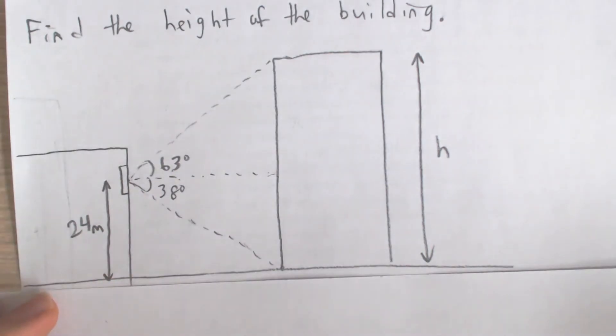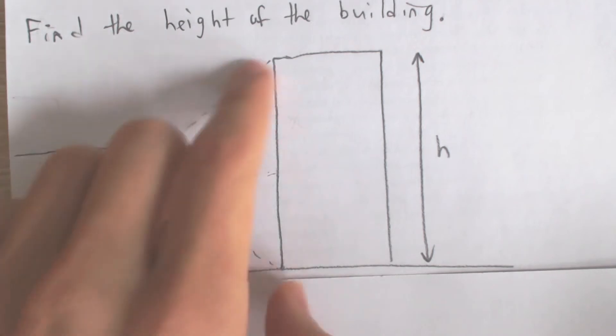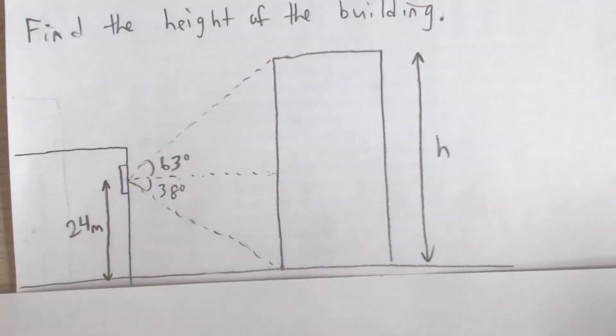This is kind of cool how we can actually figure this out. We're not even near the building—we're quite far away from it actually—but just by measuring these angles, we can actually calculate the height of that building even though we're not even close to it. Kind of an interesting problem.